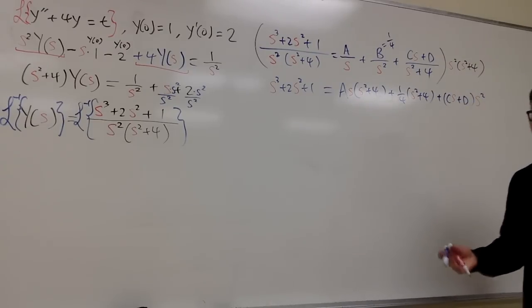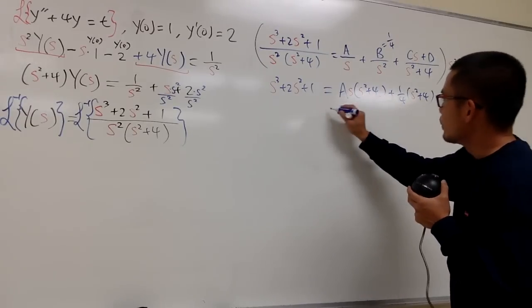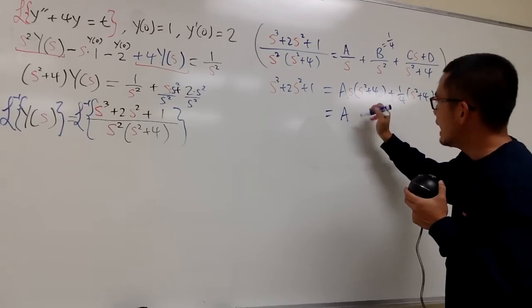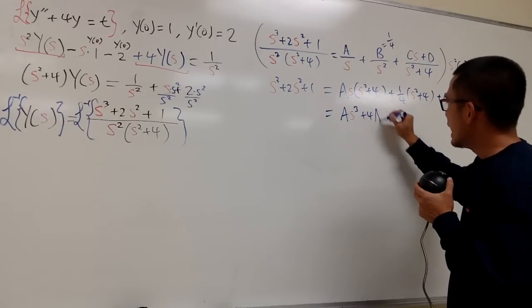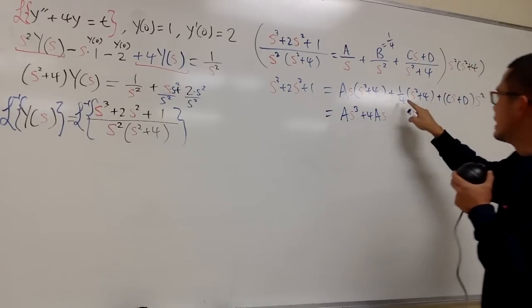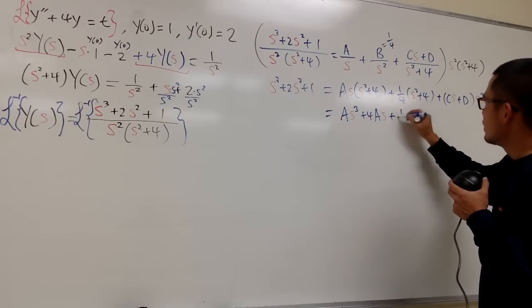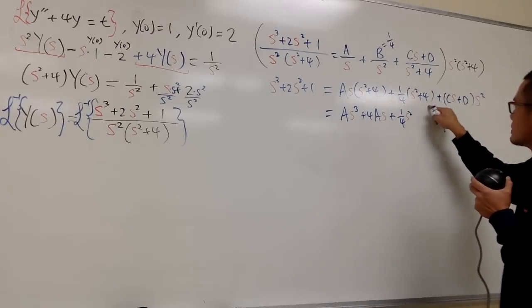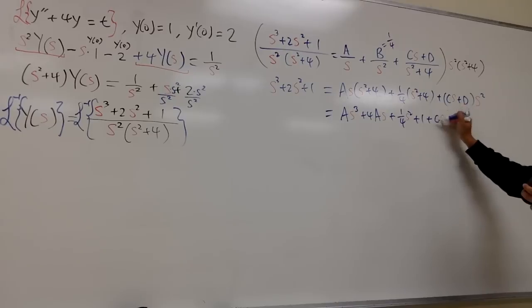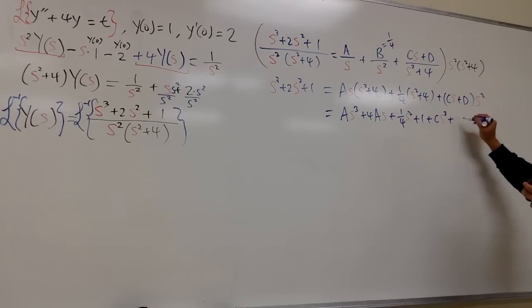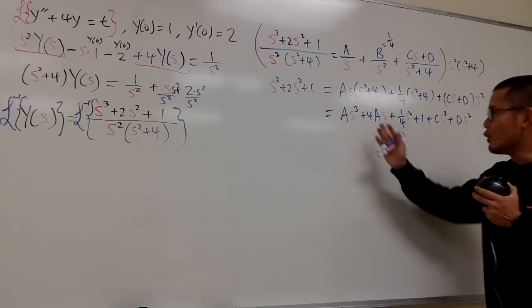On the right-hand side, we multiply things out and combine terms. As times s squared is As to the third power; As times 4 is plus 4As. Then 1 over 4 times s squared is plus 1 over 4 times s squared, and 1 over 4 times 4 is plus 1. At the end, Cs times s squared gives Cs to the third power, plus Ds squared. Note the s are in red — there's no 5.